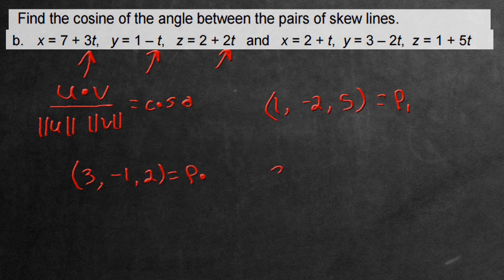So first we need to take the dot product. That'll be 3 plus 2, then plus 10. That's going to give us a 15 for the numerator. This is the result for the dot product.